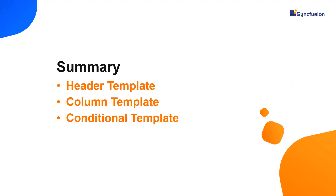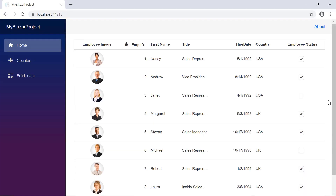Now let me quickly recap what we have seen in this video. I have showed you how to customize the grid column header and its column data, and also how to use conditions inside the data grid column template. You can download a working example from the GitHub link in the description below. You can also see about getting a free license key to use our Blazor products if you are eligible for our community license.